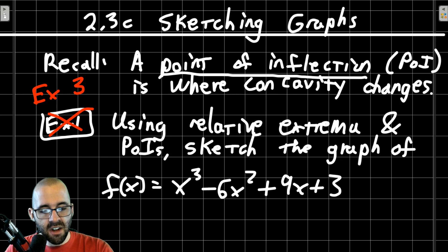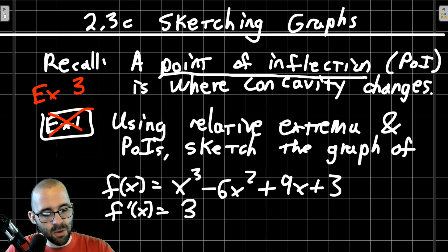To start this out, we need to find the first derivative because we want our critical points. To find the critical points, we find the first derivative and set it equal to 0. The power rule says we're going to get 3x² - 12x + 9.